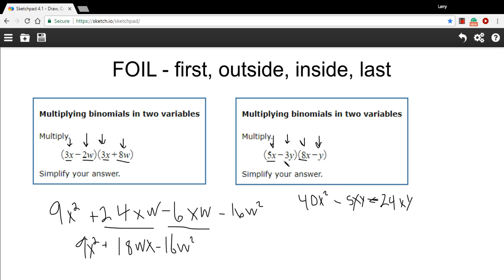And our last terms, a negative 3y and a negative y. It's a negative times a negative. That's going to be a positive 3y squared. And then these two terms we can combine. So our final answer is going to be 40x squared minus 29xy plus 3y squared.